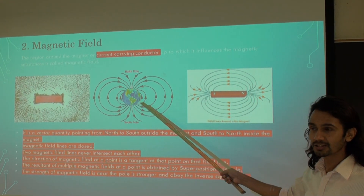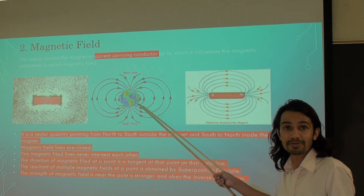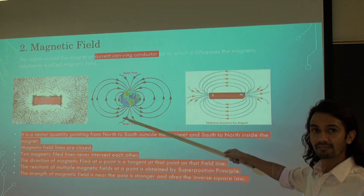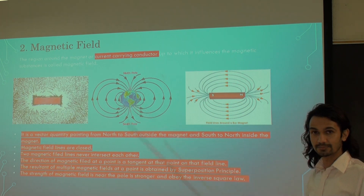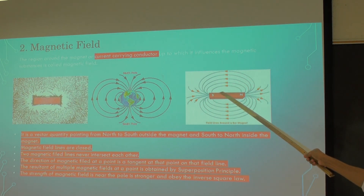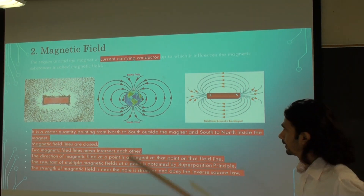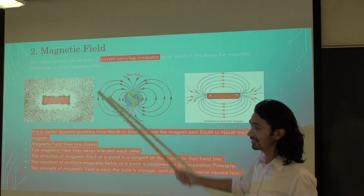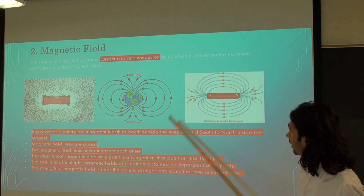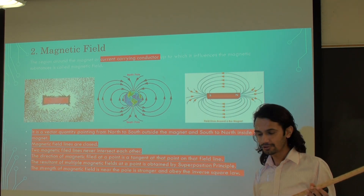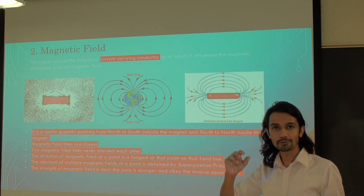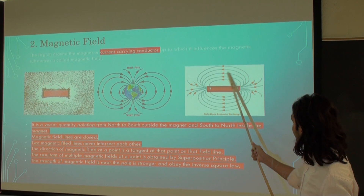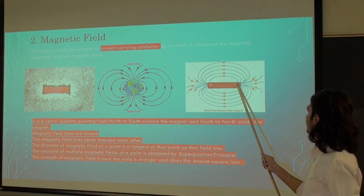Here I have a picture showing that the Earth itself is a magnet, so the Earth also has a magnetic field, as you can see in this figure. Here are the magnetic field lines for a bar magnet. The magnetic field is a vector quantity, so it has direction. In the case of a bar magnet, the field lines always point from north to south outside the magnet, but inside the magnet they point from south to north.